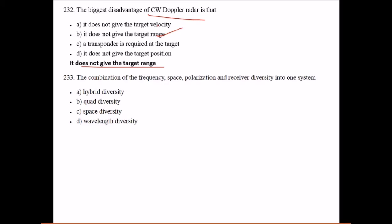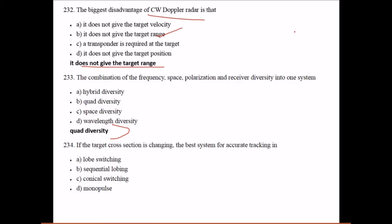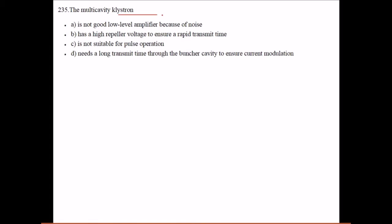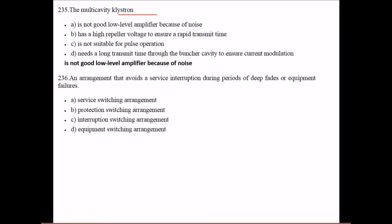The combination of frequency, space, polarization, and receiver diversity into one system is quad diversity. If the target cross-section is changing, the best system for accurate tracking is monopulse. The multi-cavity klystron is not a good level amplifier because of noise.